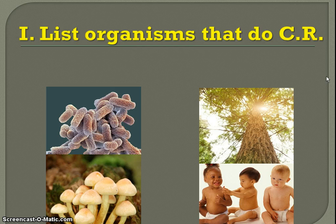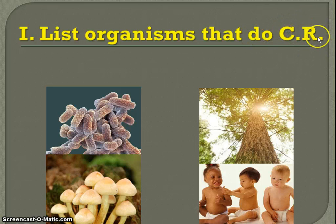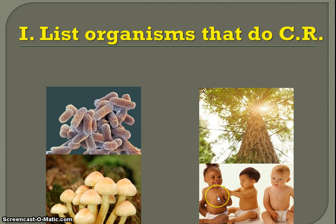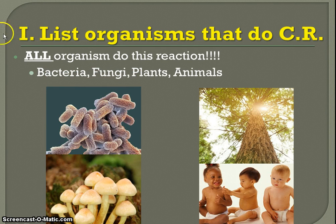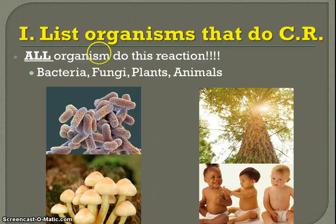Our first outline header is Roman numeral number one: list the organisms that do this reaction, which we'll be abbreviating to CR for cellular respiration. To answer this question, I've given you a hint with these pictures. What organisms do you think do this reaction? Well, this looks like a lot of different types of organisms, and you are exactly right — all organisms do this reaction. Notice how much I'm emphasizing this. I would put it in caps, bold this, star it.